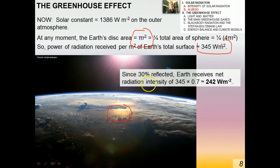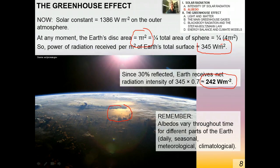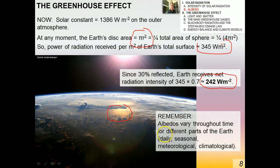Where the Sun is normally incident on the water's surface, the ocean's albedo is much lower. Since about 30% of incoming radiation is reflected, the Earth receives a net radiation intensity of about 242 watts per square meter. Remember that albedos can vary throughout time for different parts of the Earth on daily, seasonal, weather-related, and long-term climatological scales.